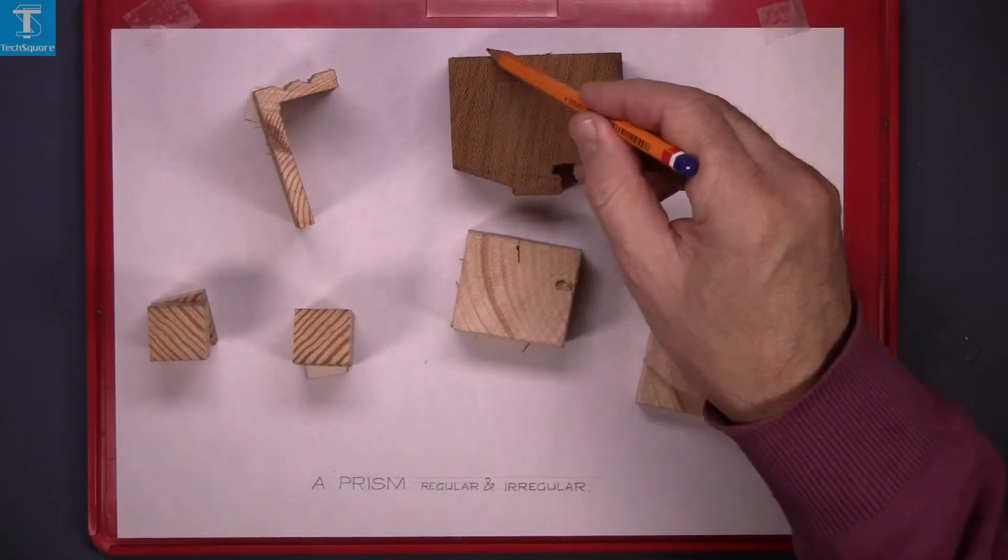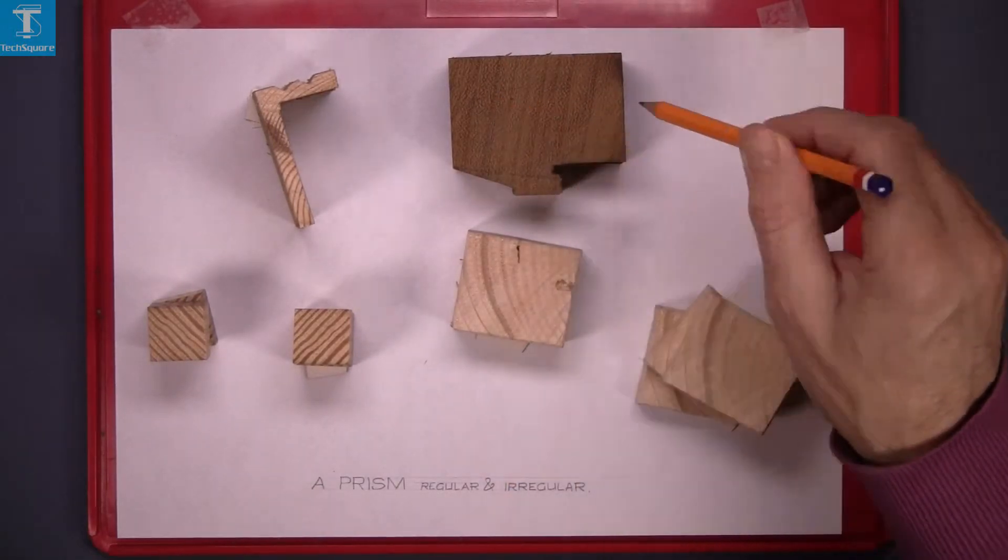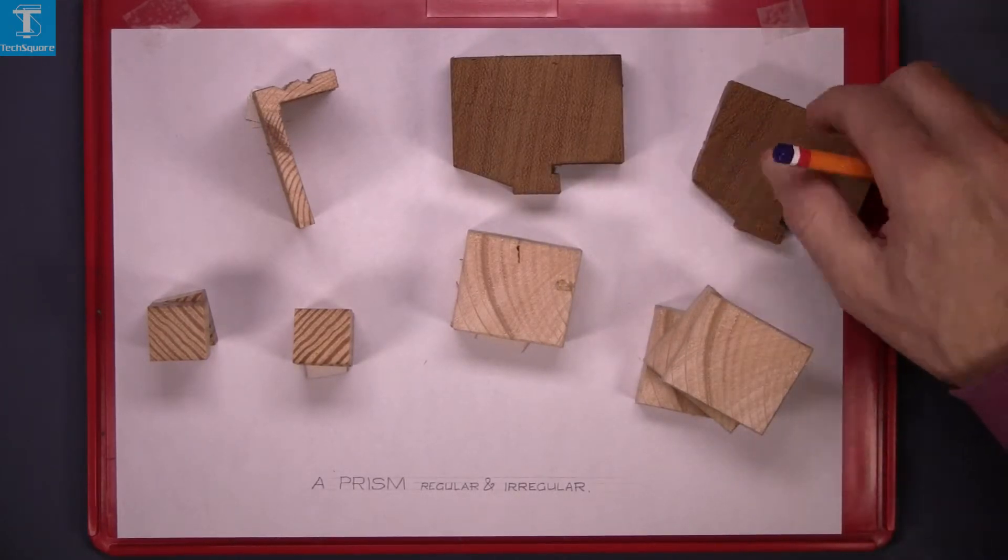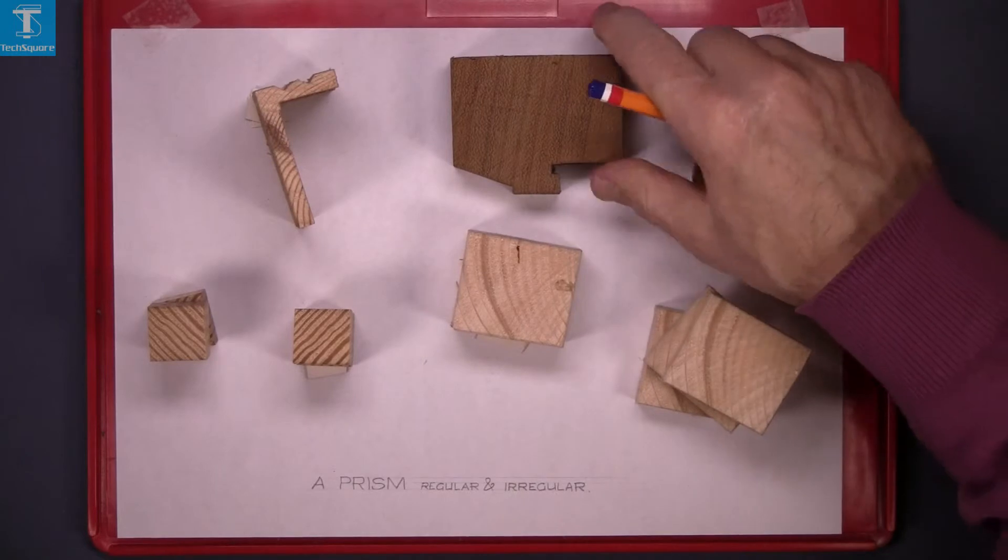So this is an irregular prism. Again, if we cut a section of it, we're left with the same shape, yes, and the same again.